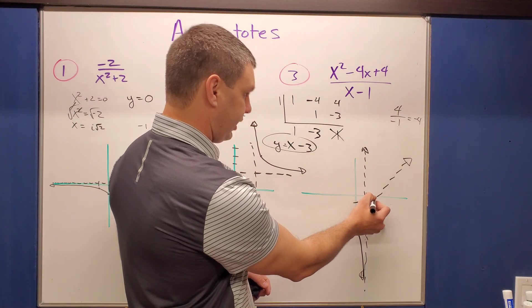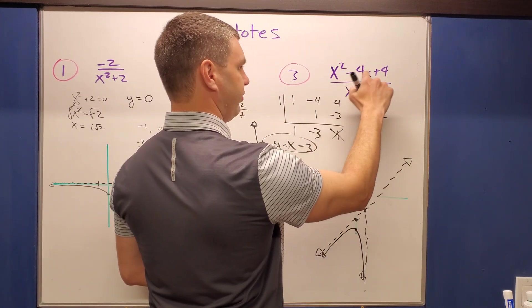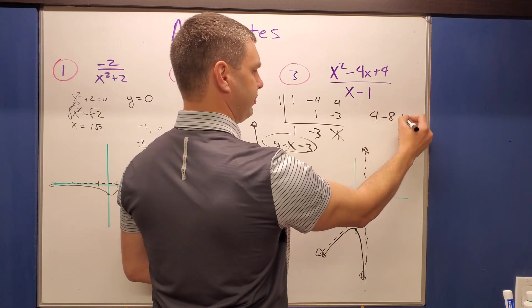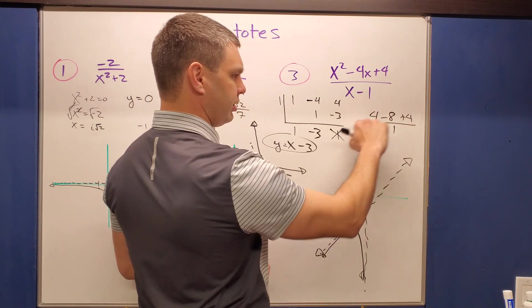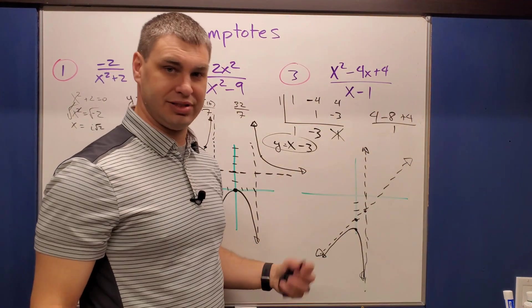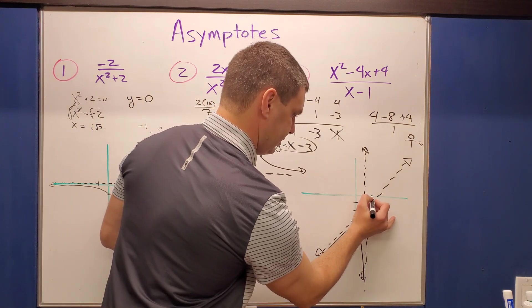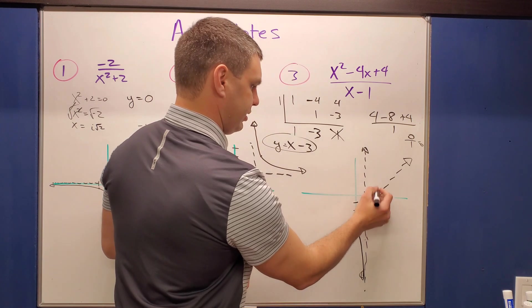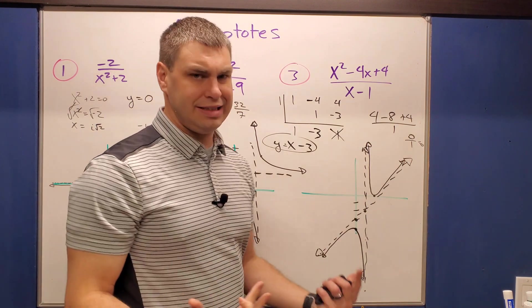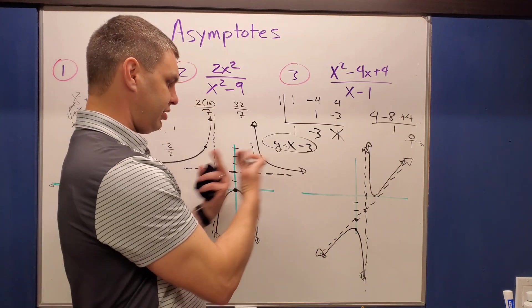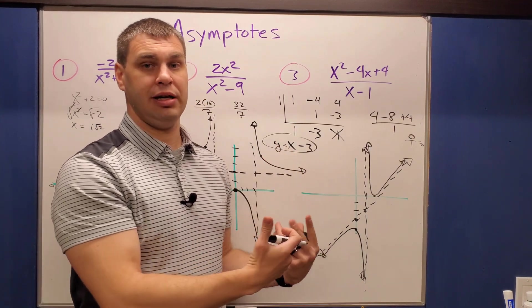Testing x equals two: the denominator is two minus one equals one. The numerator is four minus eight plus four equals zero. So at x equals two, y equals zero. The curve mirrors on the other side of the vertical asymptote. Graphing these can be tricky — just use test points on either side of your vertical asymptotes, plug them in for x, and those outputs are your y values.